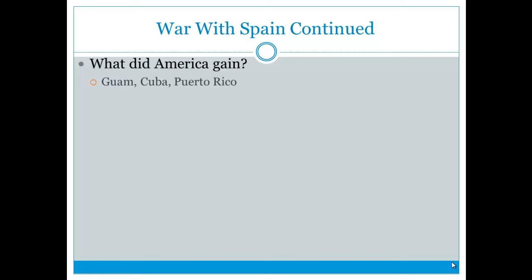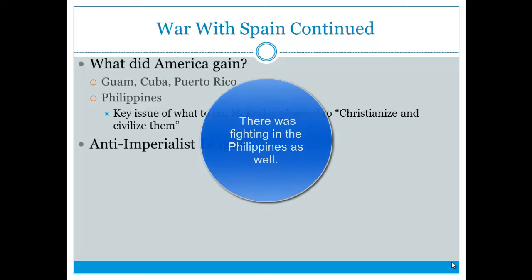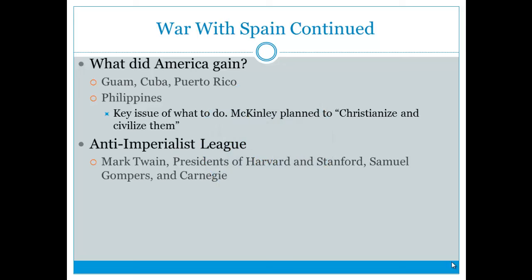As a result of the war, America gained Guam, Cuba, Puerto Rico, and the Philippines. The key issue with the Philippines was what to do with them — McKinley said, after a revelation from prayer, that he planned to Christianize and civilize them. Some people questioned why the U.S. gained territory in Asia when fighting was really about Cuba, leading to the formation of the Anti-Imperialist League, which included Mark Twain, the presidents of Harvard and Stanford, Samuel Gompers of the AFL, and Carnegie.